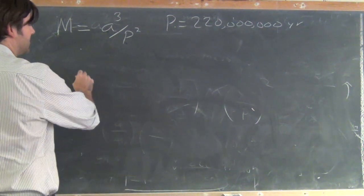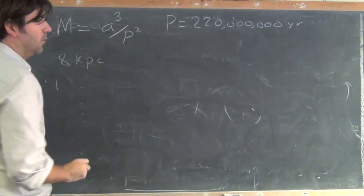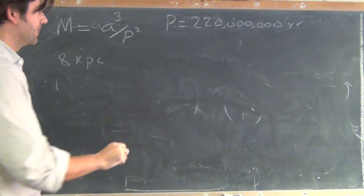The radius is 8 kiloparsecs, which we already converted last time into kilometers, 2.46 times 10 to the 17th kilometers.